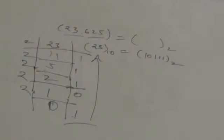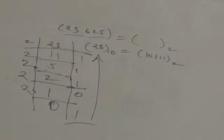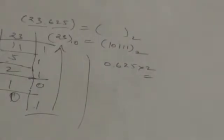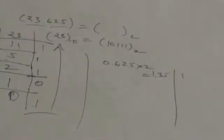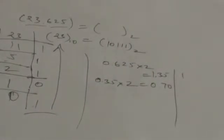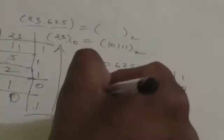Now I have to convert the fractional part. Here, instead of dividing by 2, I have to multiply by 2 because it is a fractional part. So 0.625 multiplied by 2 gives 1.25. The integer part is 1 and the fractional part is 0.25. Now again multiply the fractional part by 2, and I get 0.70. The integer part is 0 and fractional part is 0.7.